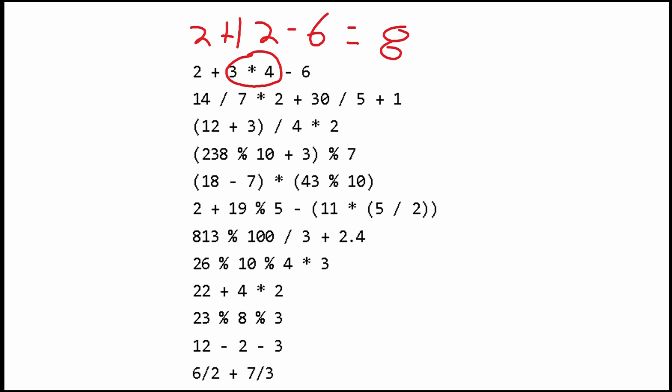In the next question, we have 14 divided by 7, which gives us 2, and then we multiply it by 2, giving us 4. Then we add 30 divided by 5, which is 6, and then 1. So we have 4 plus 6 plus 1, which equals 11. So our second value is 11.